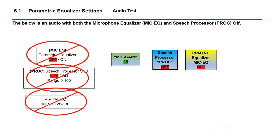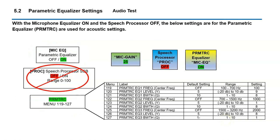Now we have the radio on. I'm going to turn off the speech processor and the microphone equalizer. Right now I only have the mic gain set to 25, speech processor is off, parametric equalizer is off — testing one two three four, four three two one. Now in this configuration I have the parametric equalizer on — testing one two three four, four three two one. I'm running the microphone equalizer only with a mic gain of 25.